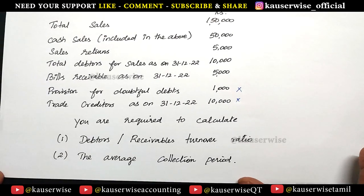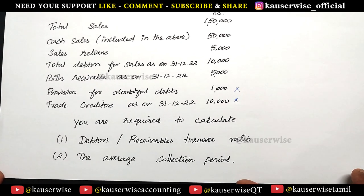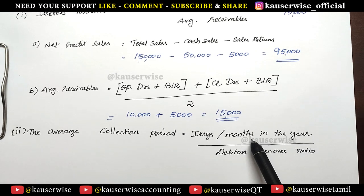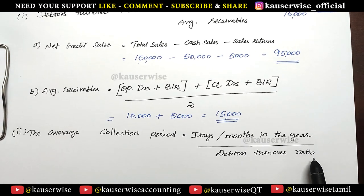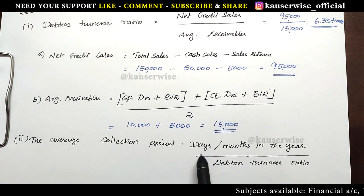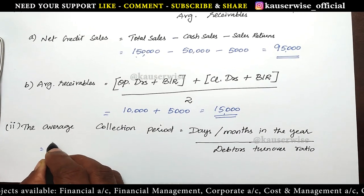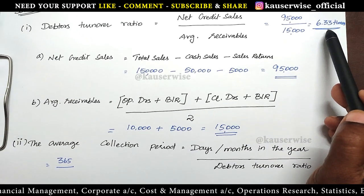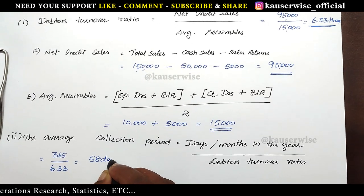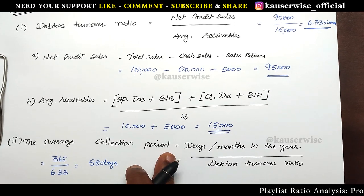Now we are going to calculate the average collection period. The formula is: number of days or number of months in the year, divided by the debtors turnover ratio. We have already calculated the debtors turnover ratio as 6.33 times. Let's first see the days calculation. How many days in a year? 365 days divided by 6.33 gives you 58 days. If you get 0.5 you can round up the figure. So the average collection period in days is 58 days.